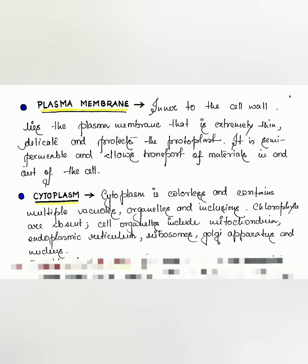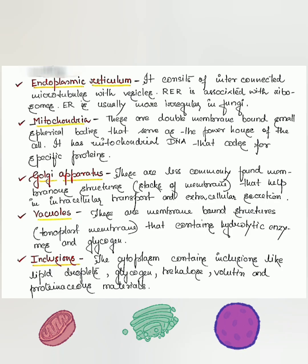The cytoplasm is colorless and contains multiple vacuoles, organelles, and cytoplasmic inclusions. Chlorophylls are absent. Cell organelles include mitochondria, endoplasmic reticulum, ribosomes, Golgi apparatus, and nucleus. Now we'll talk about each of these organelles in a little more detail.